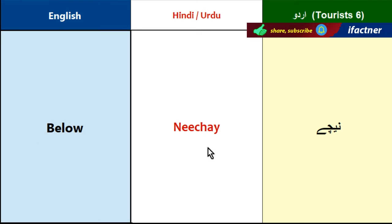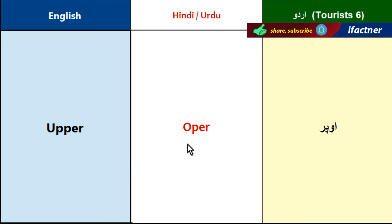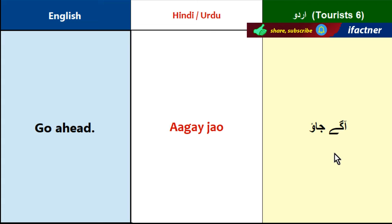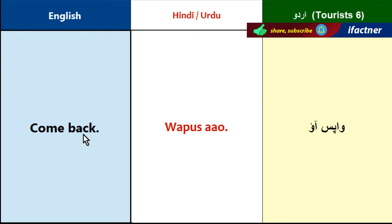Below: Neachay. Above: Ooper. Go ahead: Aagay Jao. Aagay means go, Jao means forward. Come back: Waapas Aao. Waapas means back, Aao means come.